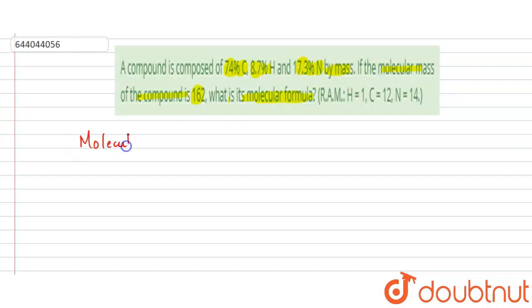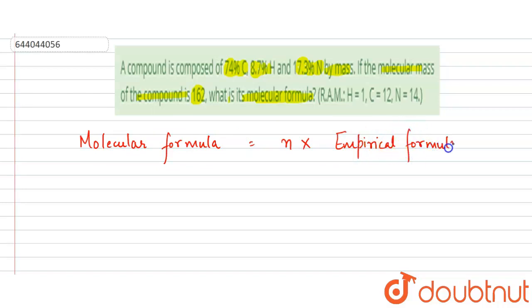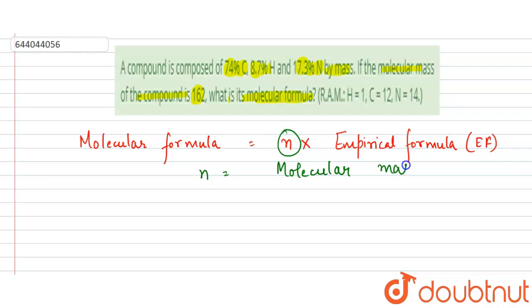The molecular formula is equal to n times the empirical formula (EF). Here, n is equal to the molecular mass divided by the empirical formula mass.